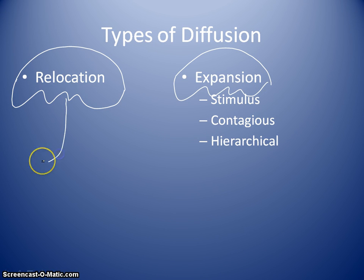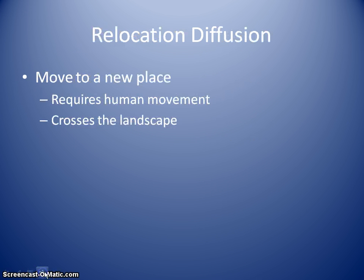So we have our two umbrella categories of expansion and relocation diffusion. As a part of expansion diffusion, we have stimulus, contagious, and hierarchical diffusion. So let's go through these and talk about each one and what are the characteristics of those types of diffusion.